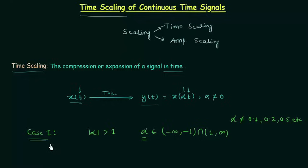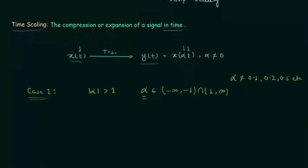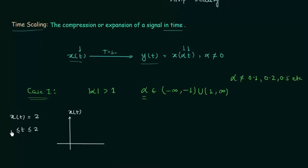You will see why this is the case of time compression when we solve one example. The signal x(t) is equal to 2 when time t is greater than or equal to 0 and less than or equal to 2. When you plot this you have a waveform where the x-axis is for time t, amplitude is equal to 2. Now we want to scale the time with alpha equal to 2, meaning we need to find x(2t).